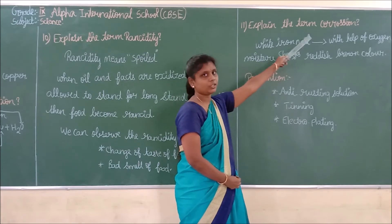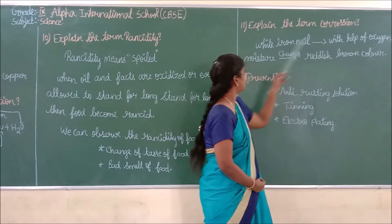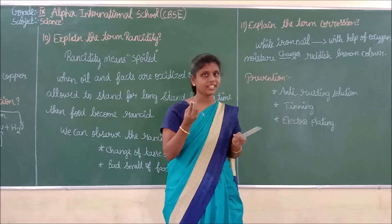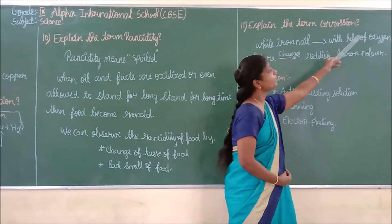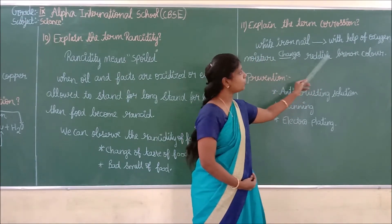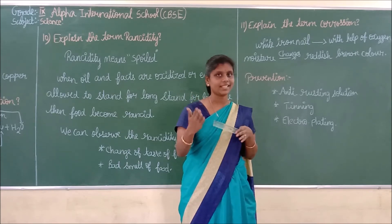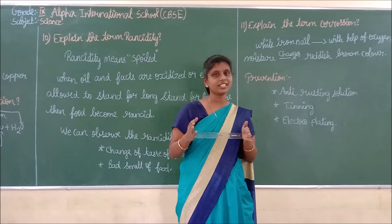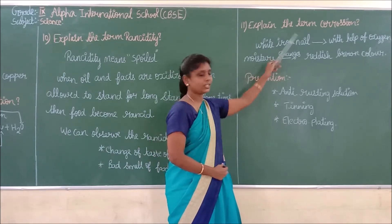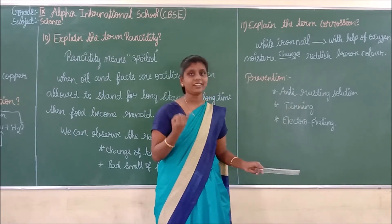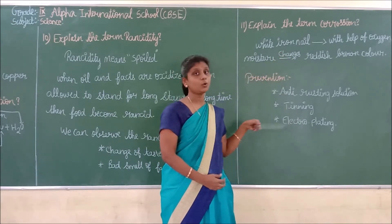Next, explain the term corrosion. A white iron nail, with the help of oxygen and moisture, will change into a reddish brown color after a few days or months. That reddish brown color is called corrosion. How can we prevent corrosion? By three methods: using an anti-rusting solution, thinning, and electro-plating, we can easily prevent corrosion.